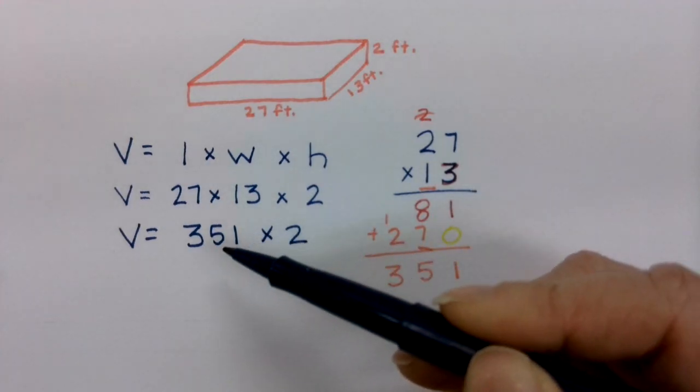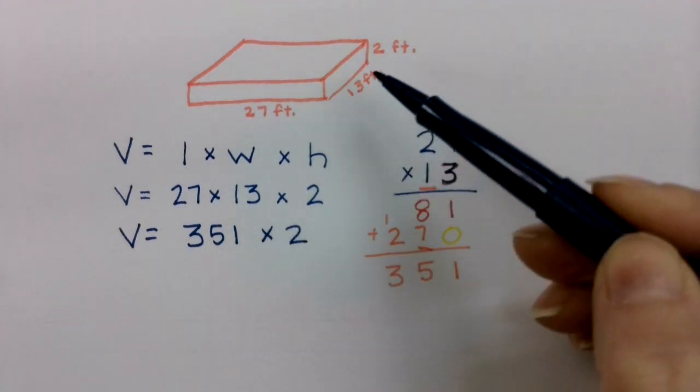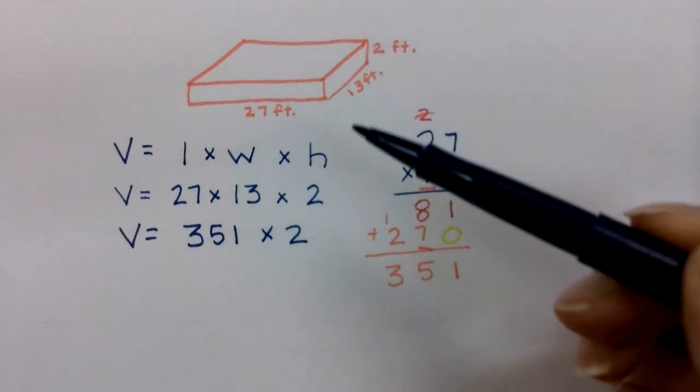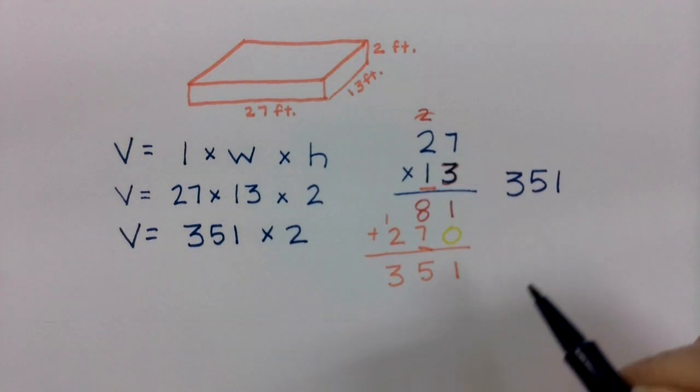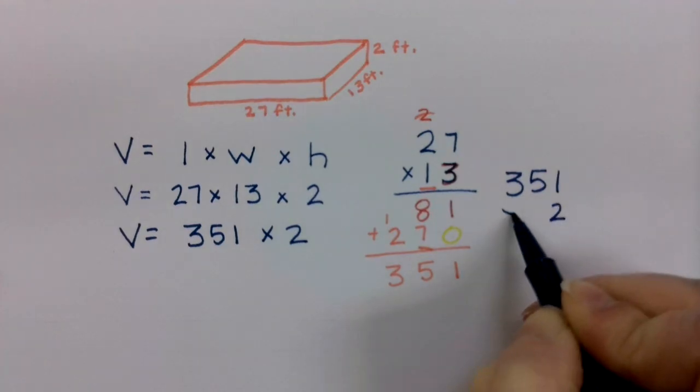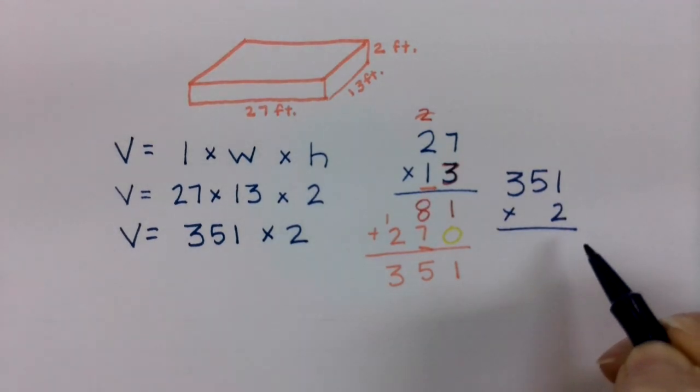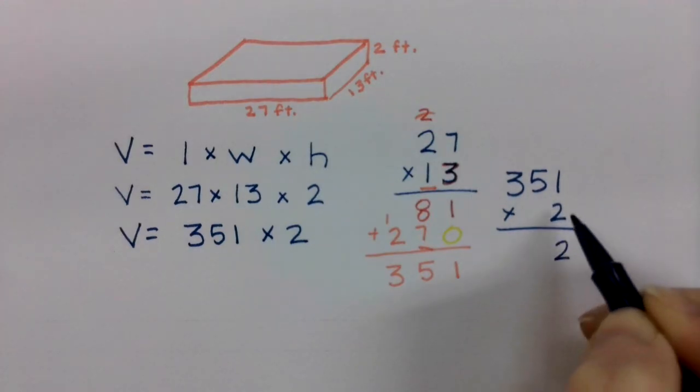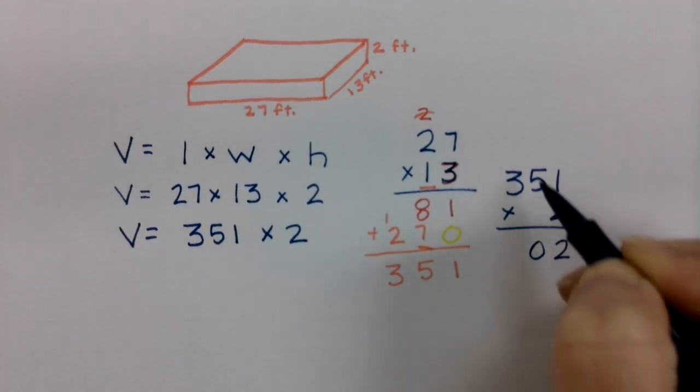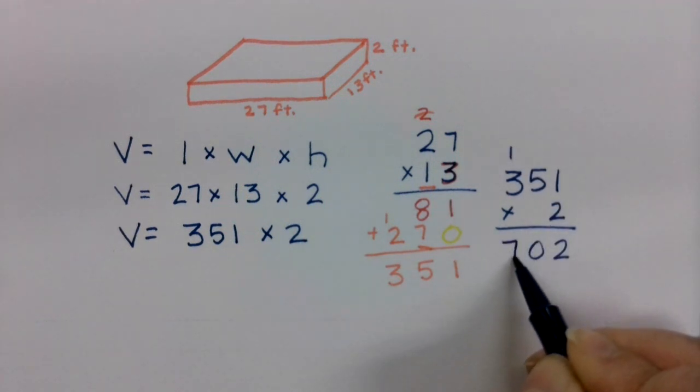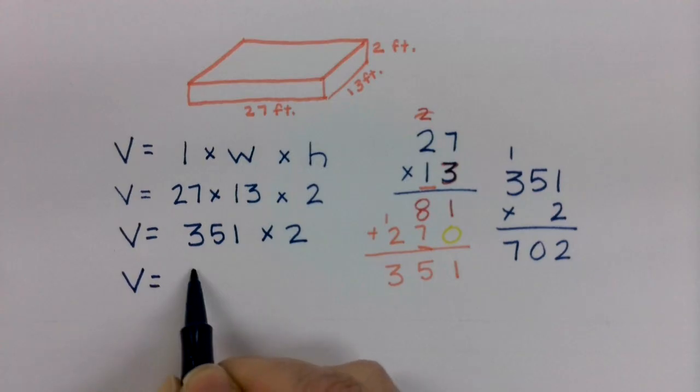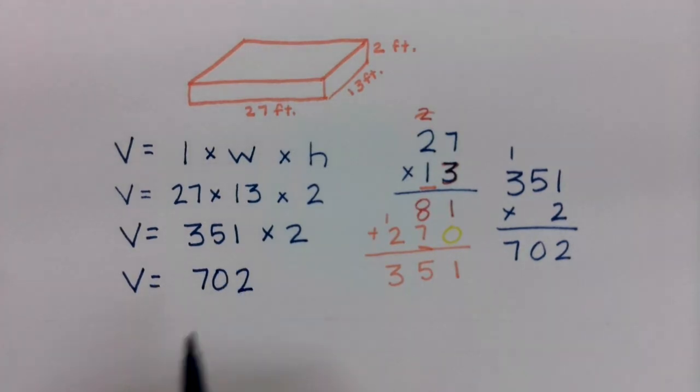I'm going to take 351 and multiply it by 2 to account for the fact that there are actually 2 layers. I can do that by adding 351 two times or multiplying by 2. Either way, we're going to arrive at the same answer. 2 times 1 is 2. 2 times 5 is 10. 2 times 3 is 6 plus 1 is 7. So my answer is 702.